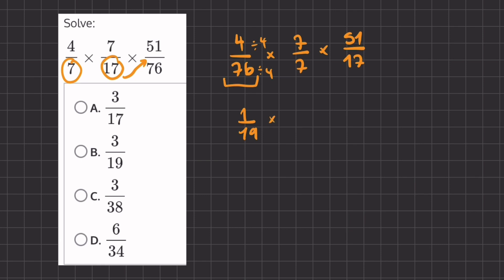Now if we take 7 over 7, which is just 1, and if we take 51 over 17, if we simplify this fraction, it's going to simplify into 3, because 17 goes into 51 three times.